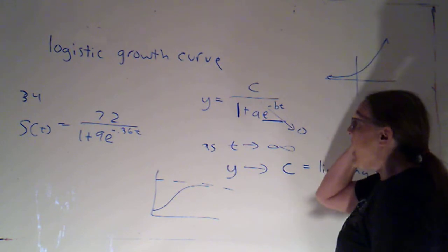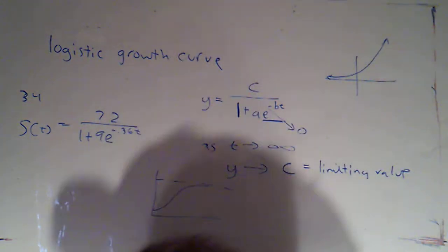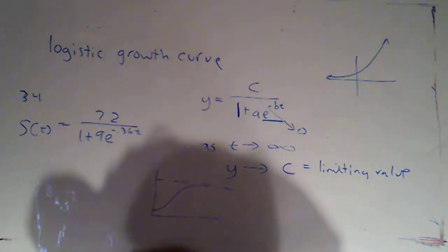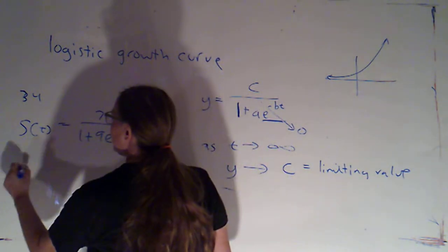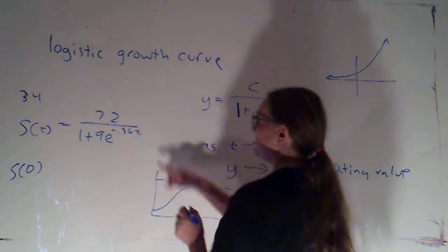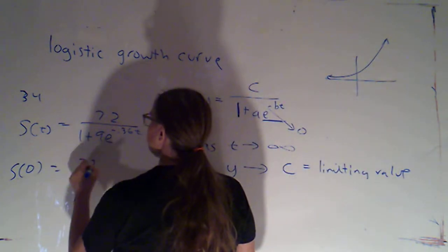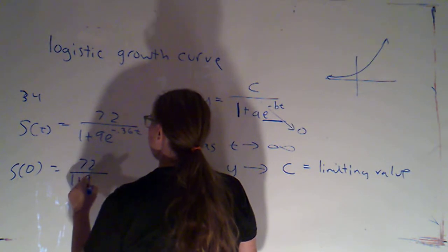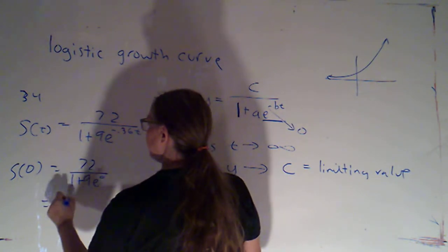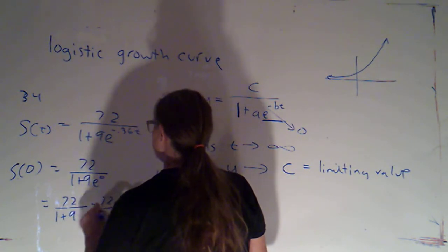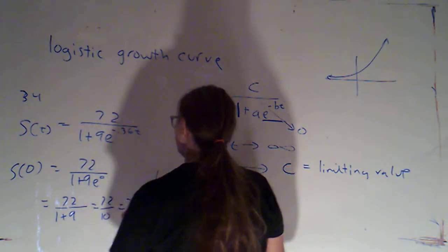Alright. And so, with this problem, we were asked to find S of 0 and the limiting value. So, S of 0 would be what I get when I plug in 0 for t. That would be 72 over 1 plus 9e to the 0. That's 72 over 1 plus 9. That's 72 over 10, or 7.2.